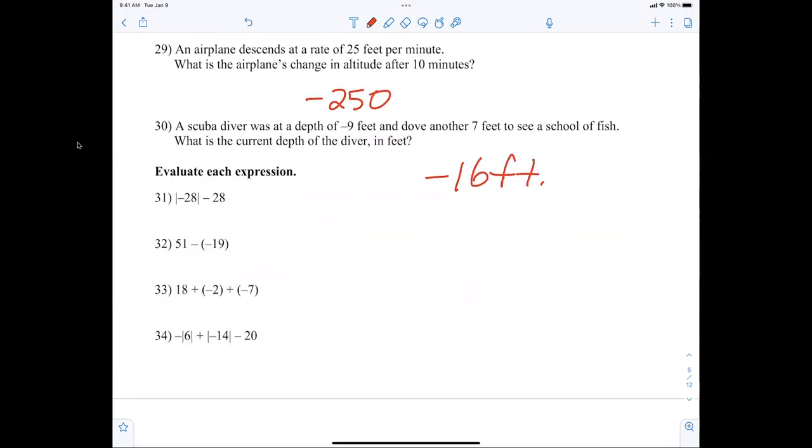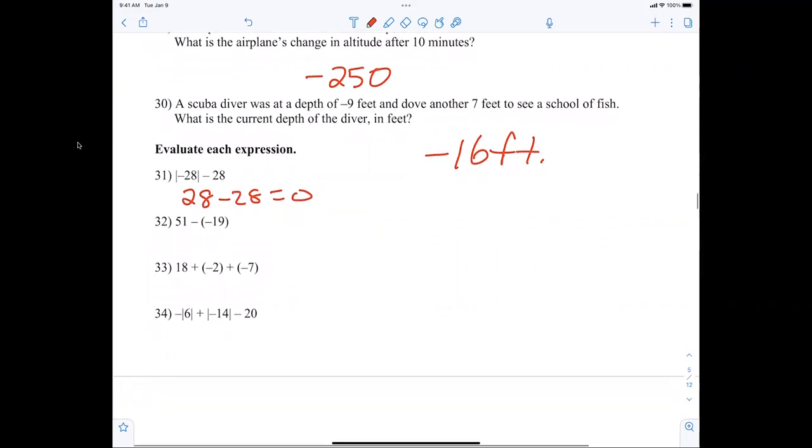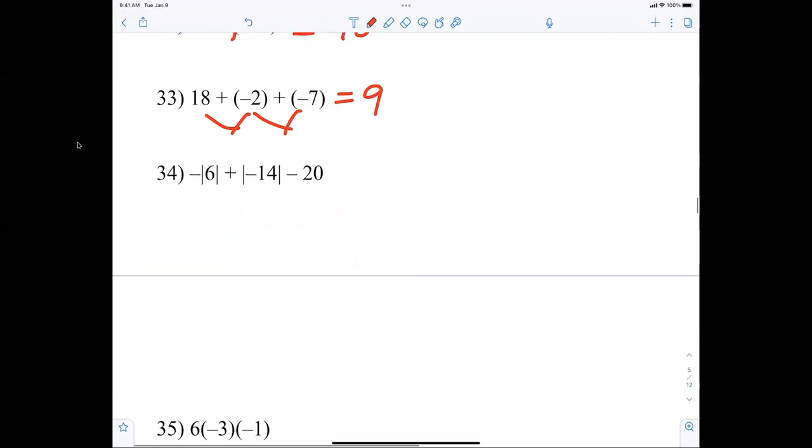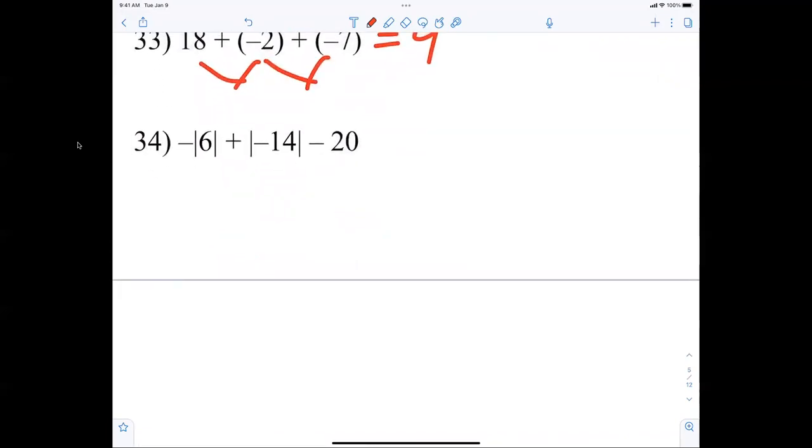All right. Now, absolute value of negative 28 is 28. And then 28 minus 28, of course, is 0. Now, here's, remember, somebody was asking me about the double negatives. Again, the double negatives make a what? Positive. So, 51 plus 19, 70. 18 minus 2 is 16. 16 minus 7 is 9. All right. And here's where we just had a question, which was a good one. Absolute value of 6 is 6, but there is a negative still out in front, so it's negative 6. Plus, absolute value of negative 14 is 14 minus 20. Negative 6 plus 14 is 8. 8 minus 20 is negative 12. Everybody happy with that?